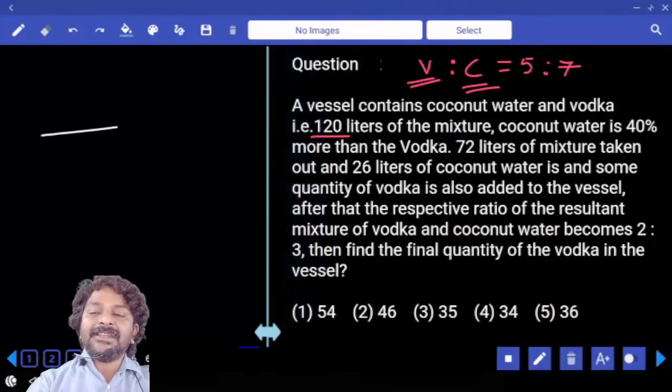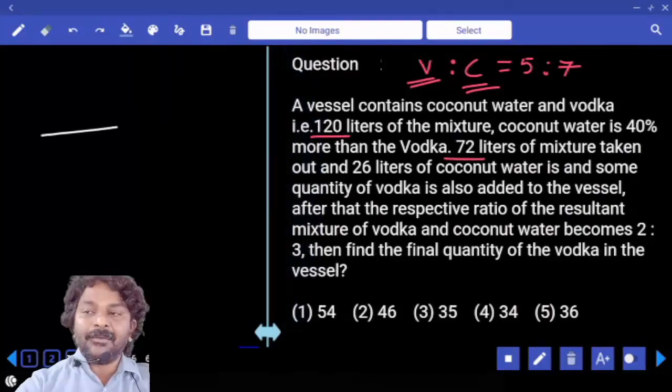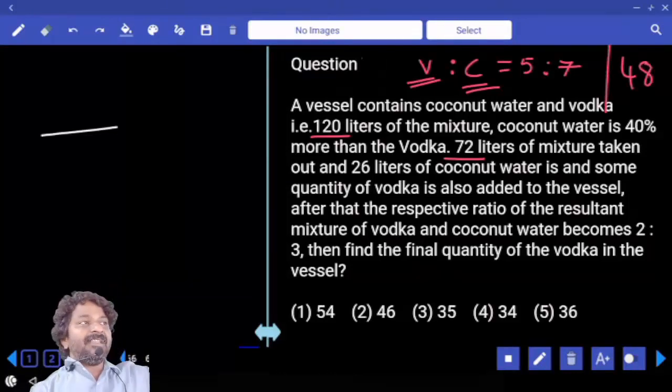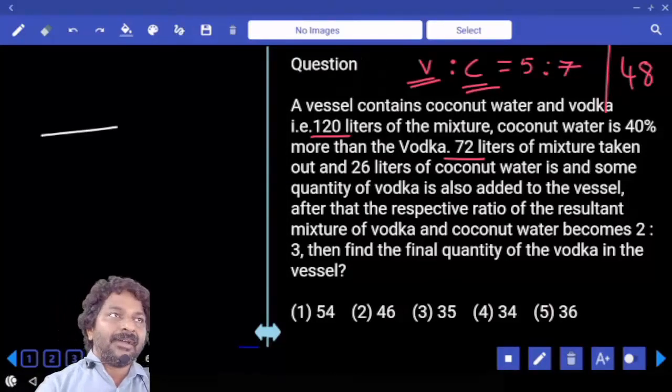From 120 liters, if 72 liters is taken out, remaining quantity is 48 liters only. That is divided into 5 to 7 ratio. We have 12 parts.